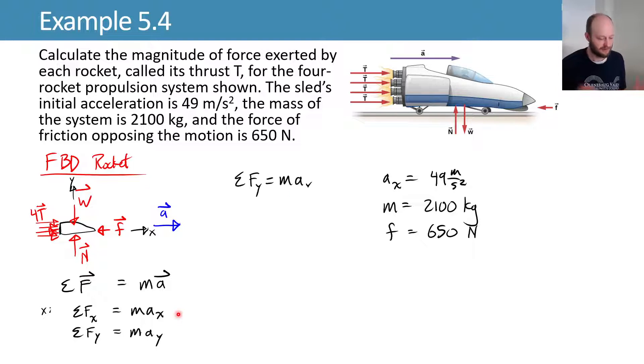Let's consider the y direction just to see. If we sum the forces in the y direction, we're not accelerating up or down. It's staying on the track. So that y becomes 0. And we can say that my normal force minus my weight is equal to 0. So my normal force is equal to the weight of the rocket sled. This is not always true, but this is true in this case. Lovely.